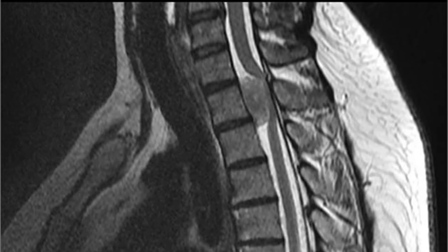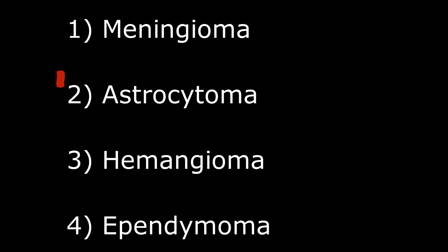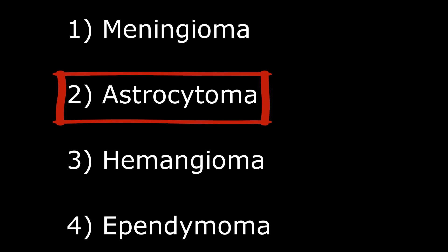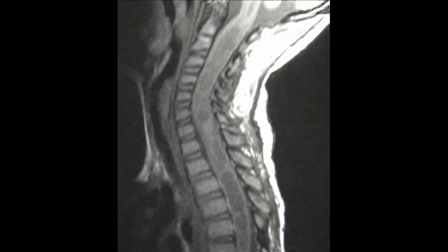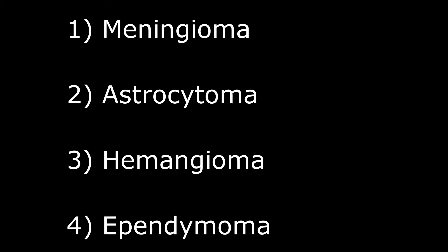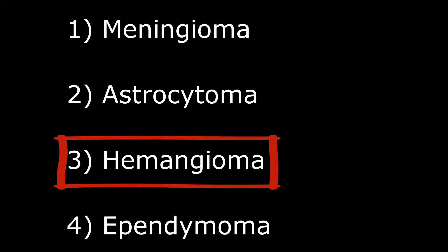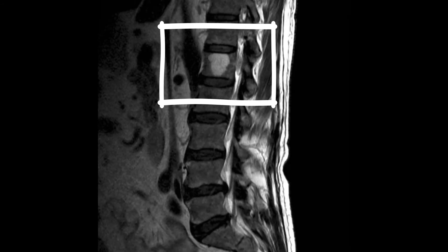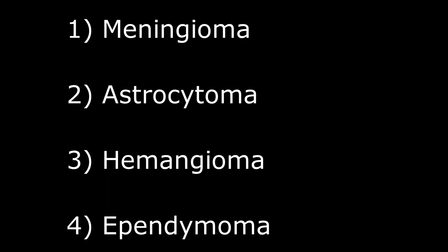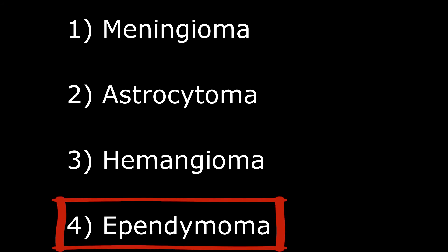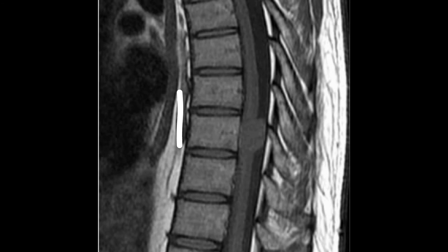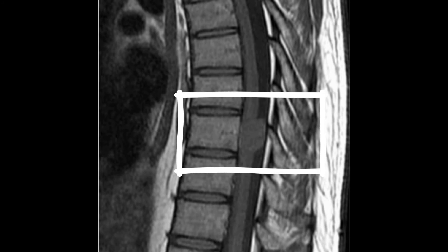Next is astrocytoma, also very common — here you can see an intramedullary invasive astrocytoma, quite diffuse. Hemangioma is more common in women and is usually asymptomatic, typically presenting at the thoracic or lumbar levels. Then ependymoma, arising from the CSF-producing cells — here you can see an intradural extramedullary ependymoma.